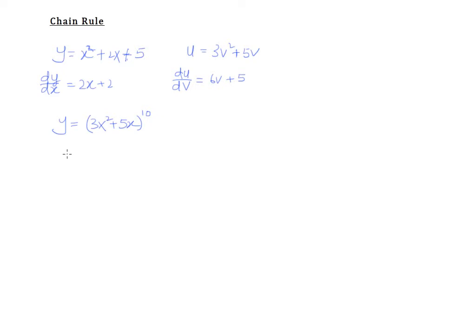So what we can do is let u equal 3x² + 5x, so that we will have y equals u^10 instead of y being equal to this entire thing power 10. This is easy, right? Because we all understand that we can differentiate y with respect to u. So dy/du will equal 10u^9.